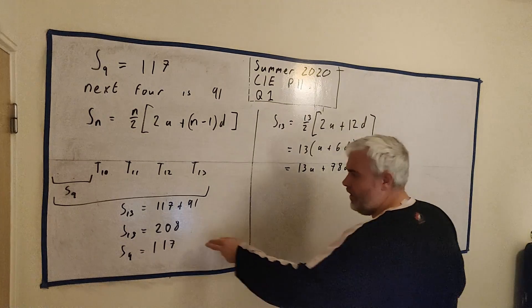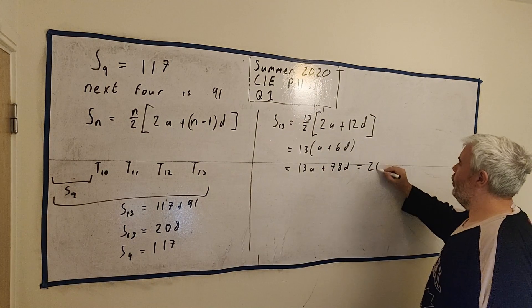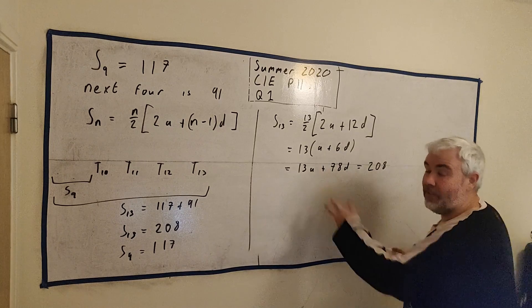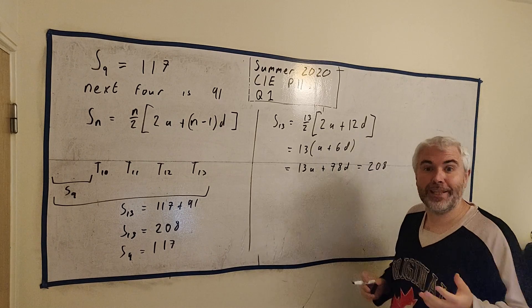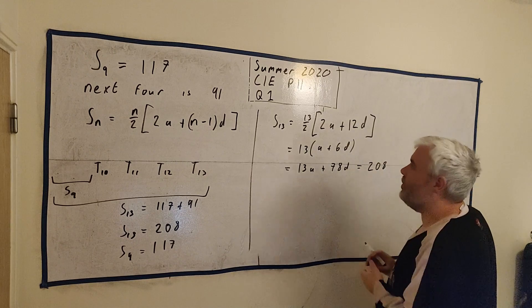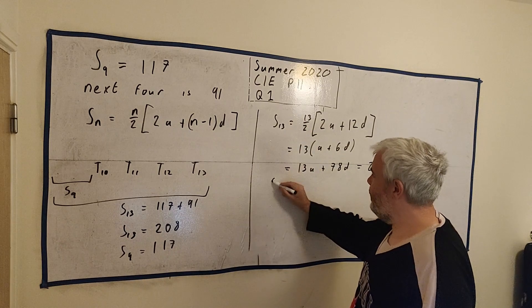So S₁₃ equals this. And we also know S₁₃ equals 208. So what this is going to start to look like is a simultaneous equation. We've got one part of it. Let's get the other part of it. Just do the same thing.